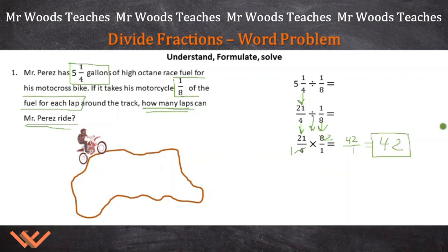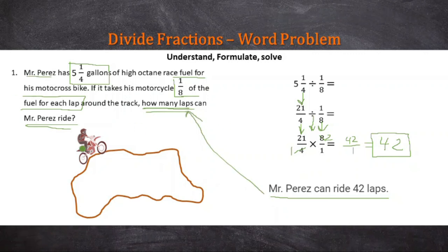Is that the answer that we're looking for? No, it says here, how many laps can Mr. Perez ride? So we actually have to write something out. There we go. I wrote out, Mr. Perez can ride 42 laps. And that answers that question right here. And if you look, I pulled out his name from here, Mr. Perez can ride laps. You know, it says how many laps, so 42 laps. And that's how many he can ride.